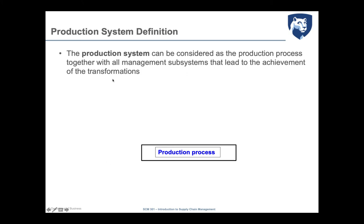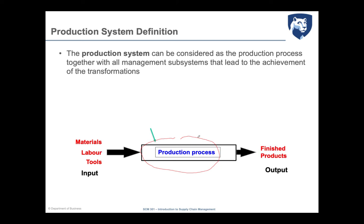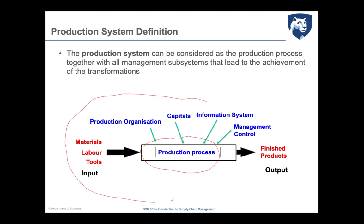The definition of the production system is not just the physical activities that take place in an industrial plant, but includes all the organization that supports the production process — all the materials, labor and tools used as input, the finished products realized as output, production organization, capital use, information systems, and managerial control. So all these elements — tangible aspects, intangible aspects, processes, human and organizational procedures — realize what is called the production system.